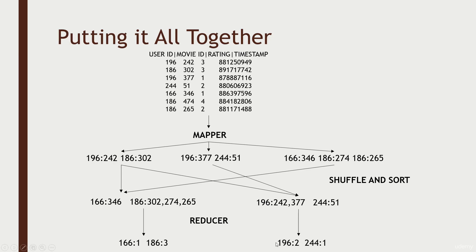At the end of the day, we get our final result, which will be streamed back to our client node. In a nutshell, that's how MapReduce can distribute a job across an entire cluster. The mapping stage can be split up across different computers, each receiving a different chunk of the input data. After the shuffle and sort operation, you can have different computers responsible for different sets of keys while reducing them.